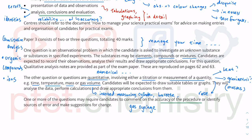One or more of the questions may require candidates to comment on the accuracy of the procedure — this is something to do with the numbers usually. By 'accuracy of the procedure,' the method is typically associated with the qualitative part of the question. We are the biggest sources of errors, and then you need to make suggestions for improvement. Be very careful: they usually talk about the procedure, not about human error.